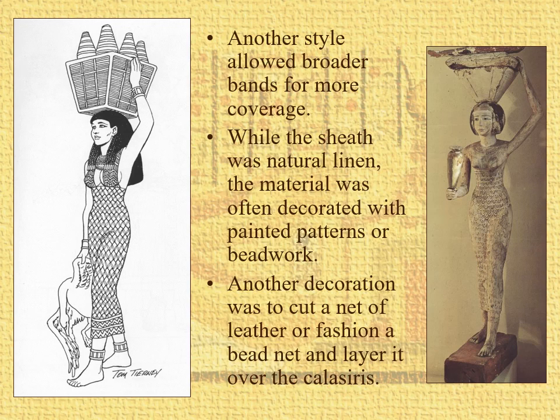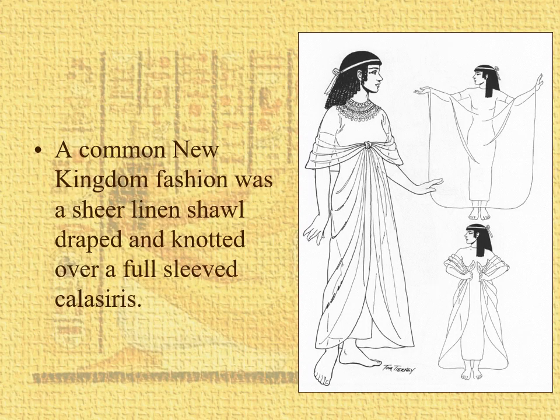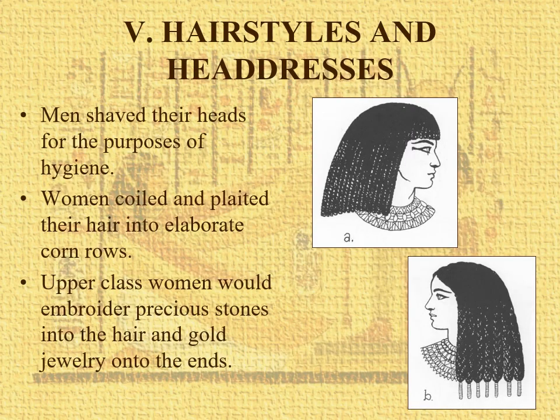Also, you could cut a net of leather or wool, or fashion a bead net, and layer it over the calisiris. On the left here is a beadwork or netting — a bead net over the calisiris, which is just white linen. Remember there's not a lot of dyeing — dyeing as in color, not dyeing as in dead. A common new fashion was to take a sheer linen shawl, drape it, and just kind of wrap it around and knot it in the back, or in the front.